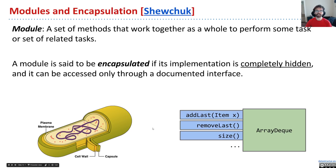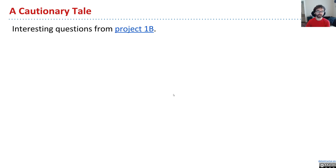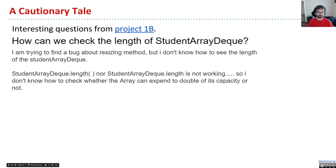On Project 1B, let's see how encapsulation can be an important notion by considering some questions students have. Project 1B requires you to build an autograder for Project 1A — the construction of an array deck class. You have to write tests that prove a specific implementation of array deck is broken. One student asked: how do we check the length of student array deck? I'm trying to find a bug in the resize method, but if I try to do studentArrayDeck.length, it's not working — so I don't know how to check whether or not it expands.